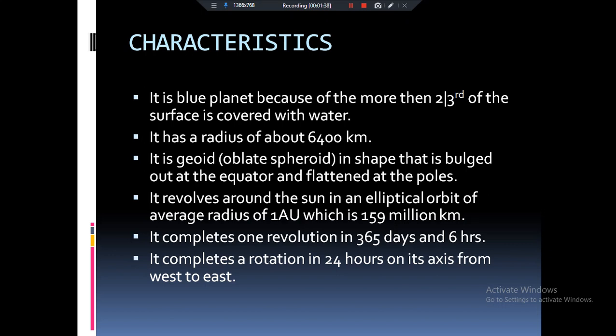Now, coming to the size of the earth, it is having the radius of 6400 kilometers. But as we know, the shape of the earth is geoid, which means the radius at the equator is more than the radius at the poles.